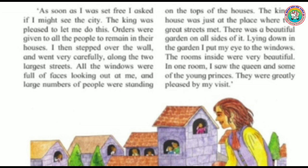The king's house was between two streets with a beautiful garden around it. Gulliver crouched down to look into the windows and saw that the rooms were very beautiful. There, the queen and small princesses lived — they were all very happy to see him. Students, I hope you understood the lesson. Please subscribe to our channel, like, and share with your friends. Goodbye.